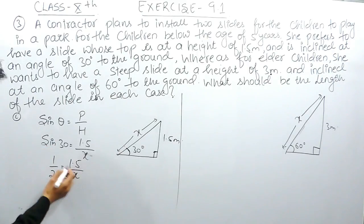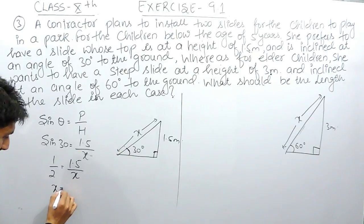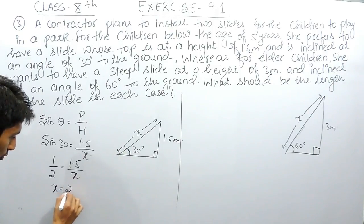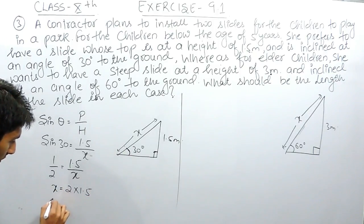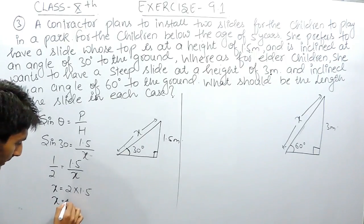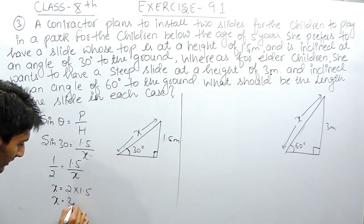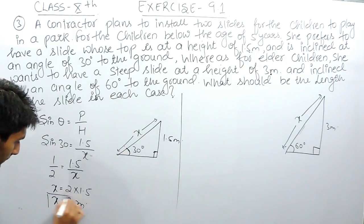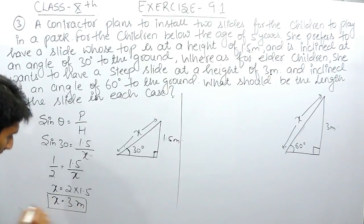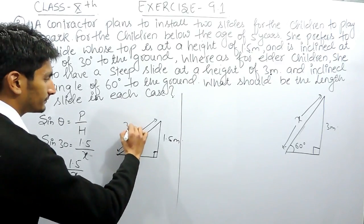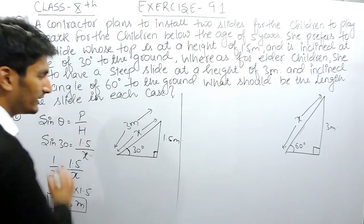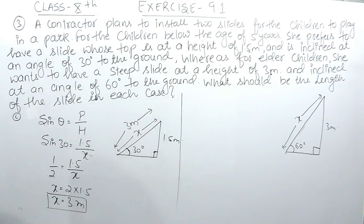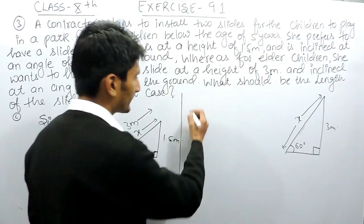Cross-multiplying, x equals 2 multiplied by 1.5, which gives x equals 3 meters. So the length of the slide in the first case must be 3 meters.